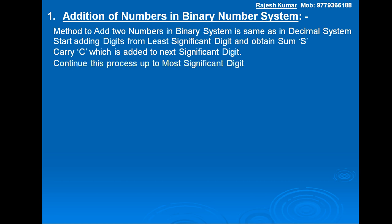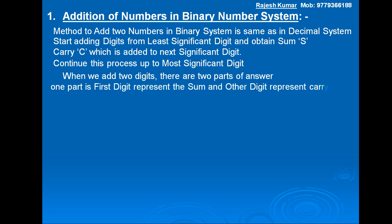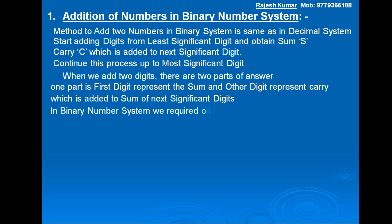Continue this process up to the most significant digit. When we add two digits, there are two parts of the answer: one digit represents the sum and the other digit represents the carry, which is added to the sum of the next significant digit. In the binary number system, we require only two digits, 0 and 1, to represent any number.